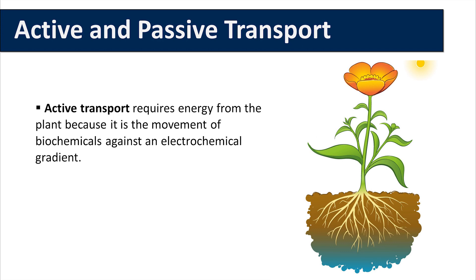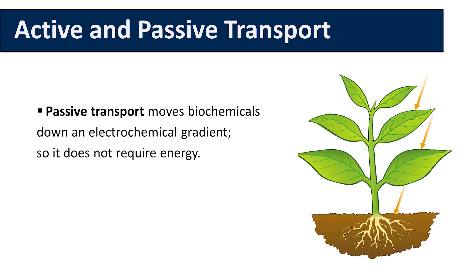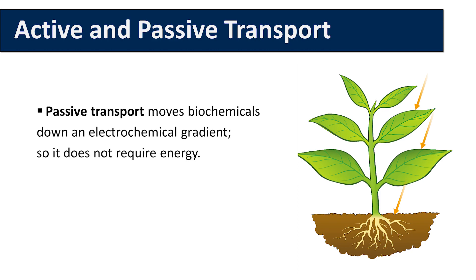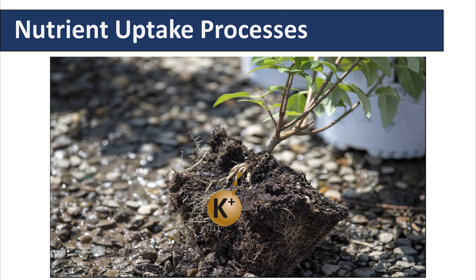Active and passive transport are biological processes that move oxygen, water, and nutrients into cells and remove waste products. Active transport requires energy from the plant because it is the movement of biochemicals against an electrochemical gradient. Passive transport moves biochemicals down an electrochemical gradient, so it does not require energy. Nutrient uptake is an active process — a plant has to spend energy to take up nutrients.